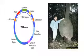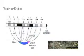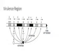What are the virulence regions? The virulence regions are responsible for the transformation of the T-DNA region into the host cells. The virulence region consists of 11 genes from vir A to vir H.